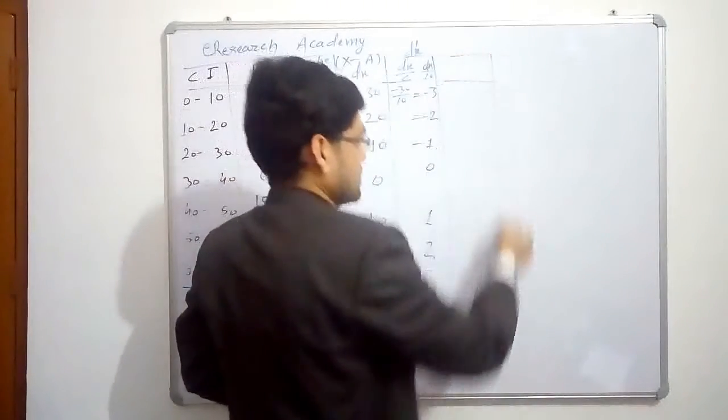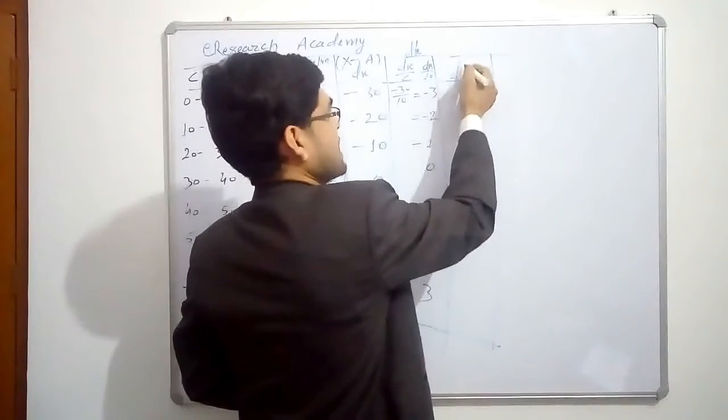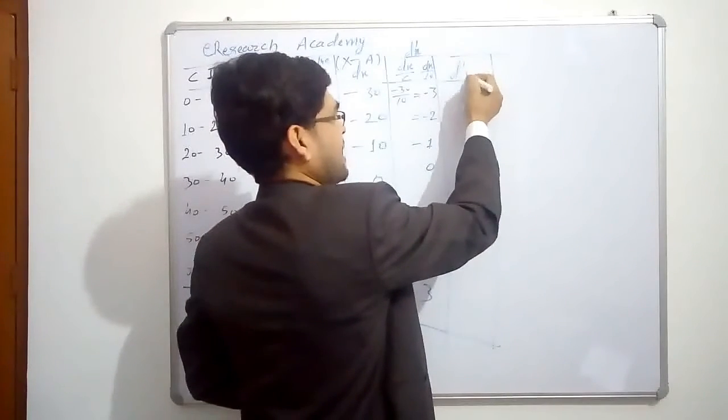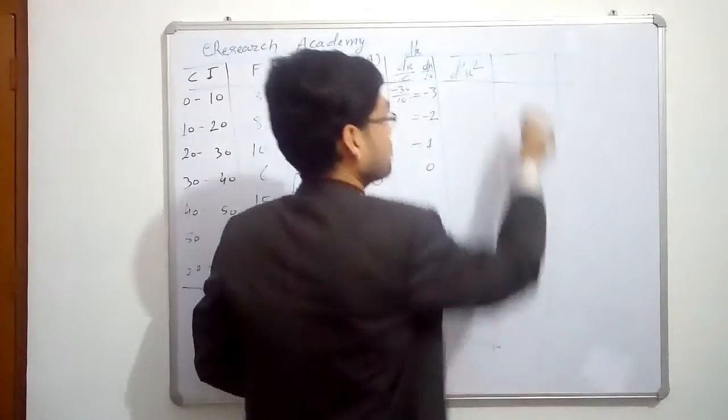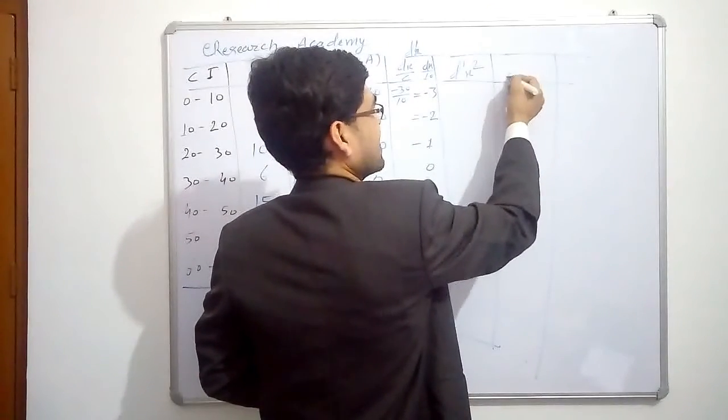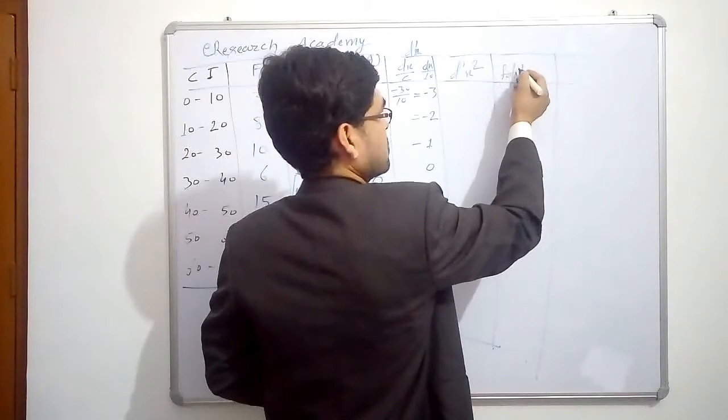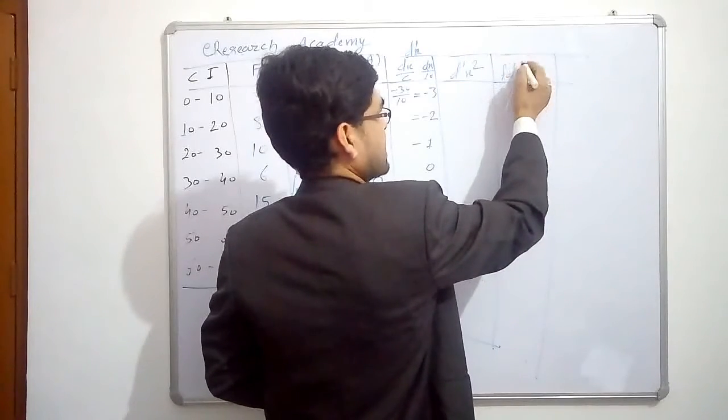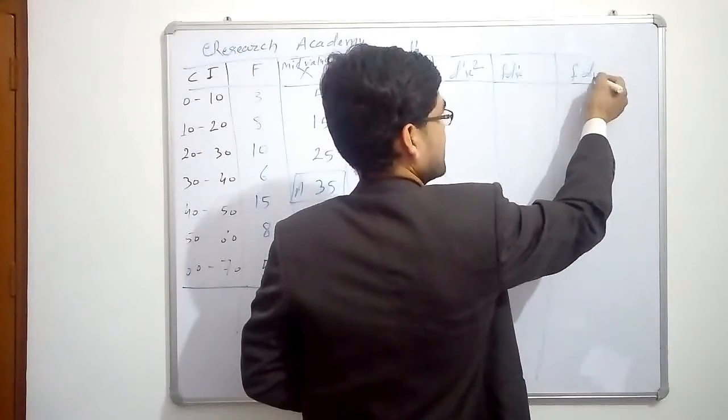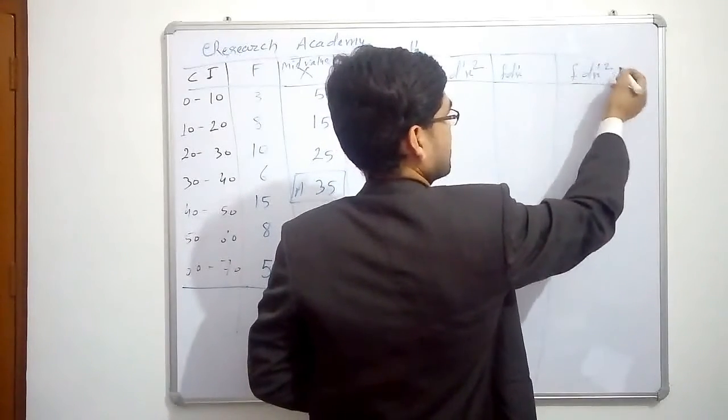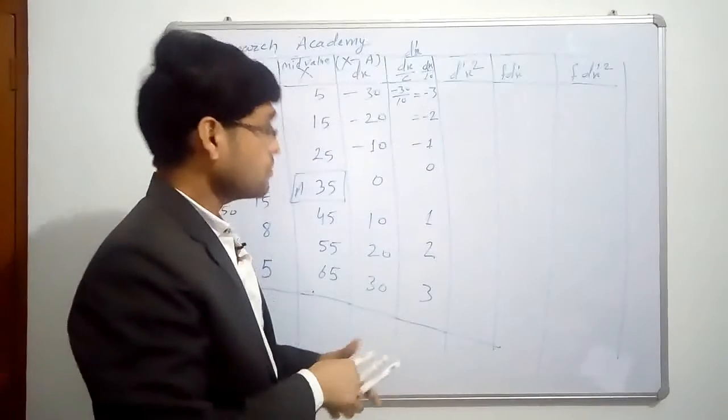Next we need square of this d-x dash. D-x dash square. Next multiplication of this d-x dash with f. So it will become f d-x dash. And finally f d-x dash square. So these much of what we need for this one.